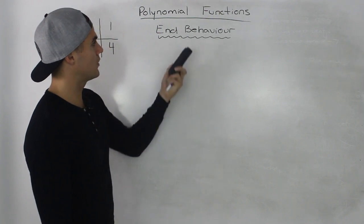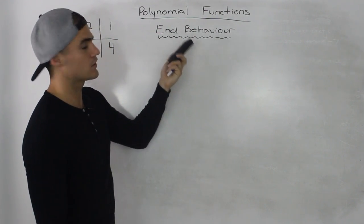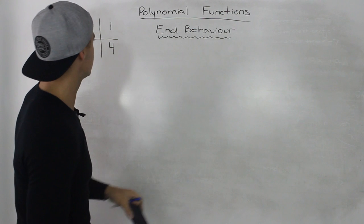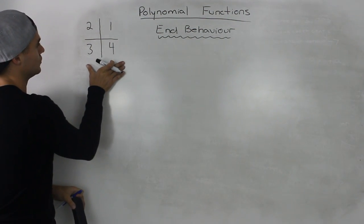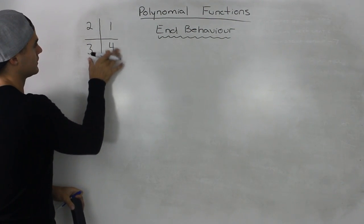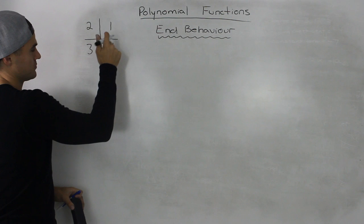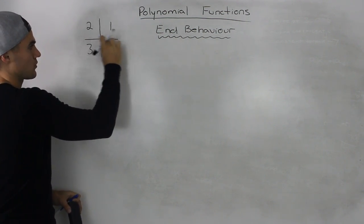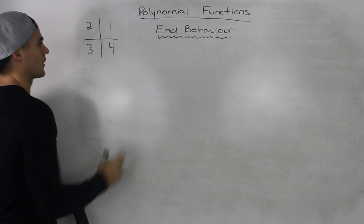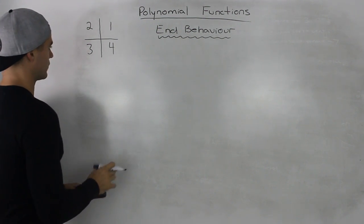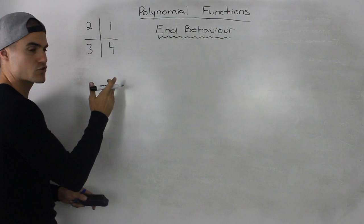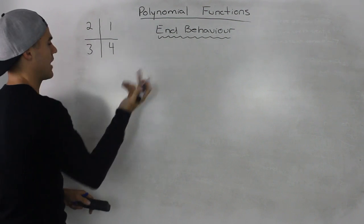In this video, we're going to be talking about end behavior of polynomial functions. Before we get into that, I want to review what each quadrant is for a Cartesian plane. This quadrant here is quadrant 1, quadrant 2, quadrant 3, quadrant 4. The reason I want to review that is because we're going to be using these quadrants to describe the end behavior.